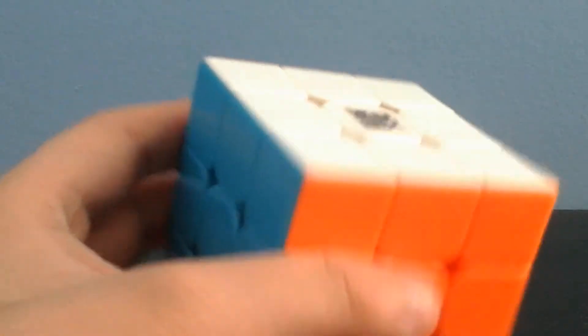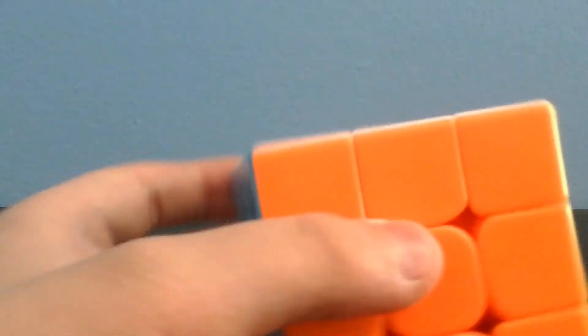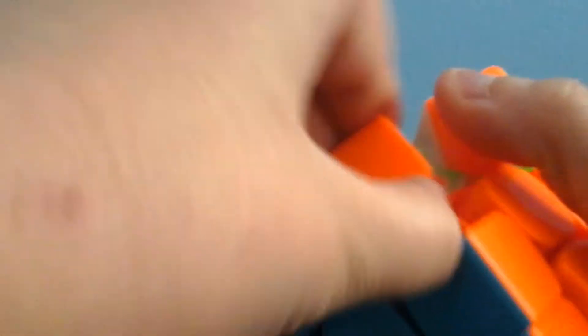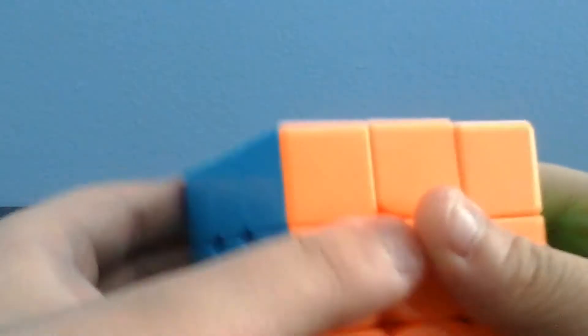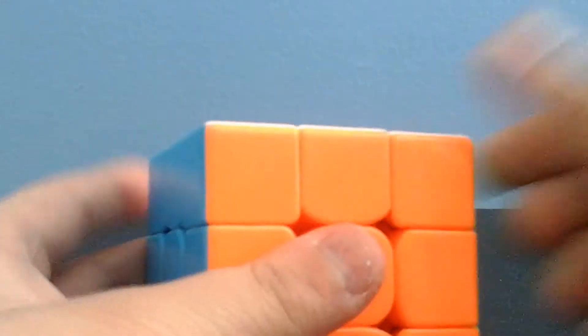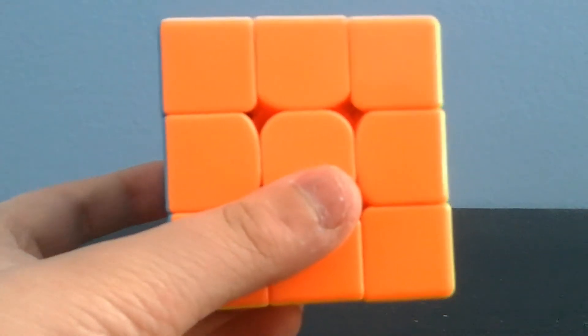As far as the mechanism goes, it's pretty good. The edges have torpedoes to prevent popping, which has never happened on my cube. It's so good that I can't even take out an edge. The corners are squared off to prevent corner twists, which has also never happened in all my solves.